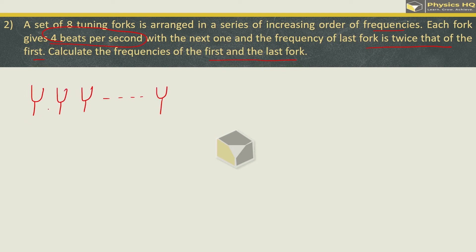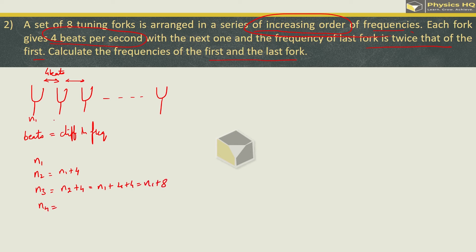There are total 8 tuning forks. We know that the beats means the difference in frequency. If the first fork has frequency n1, then the second fork will be n1 plus 4 because they are in increasing order of frequencies. Similarly, n3 will be n2 plus 4, or n1 plus 8. Likewise, the 8th fork will be n1 plus 28.